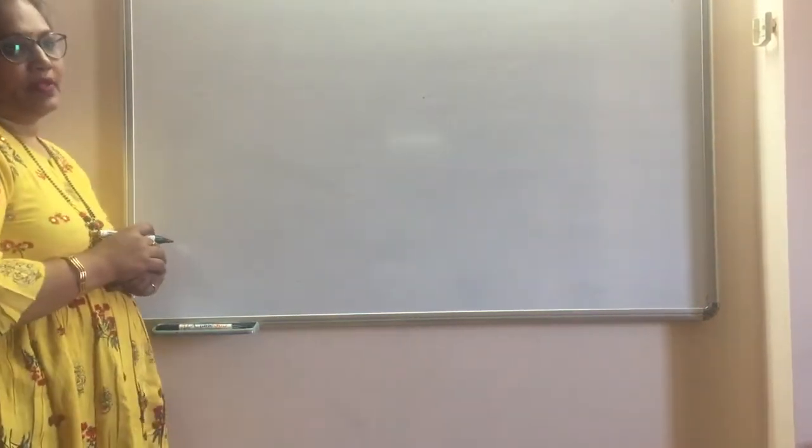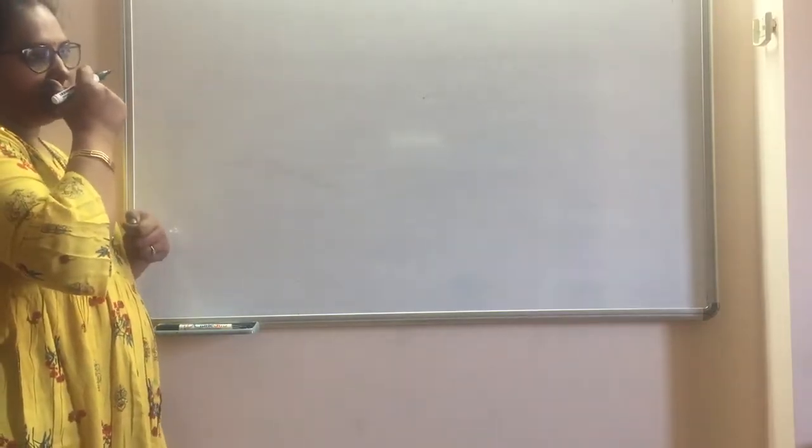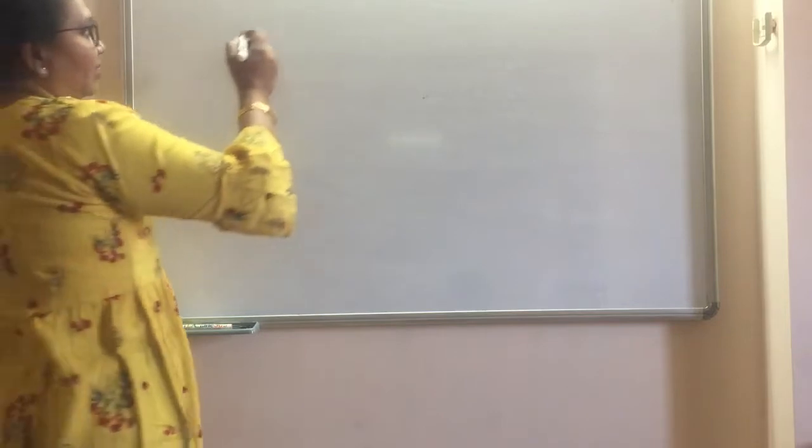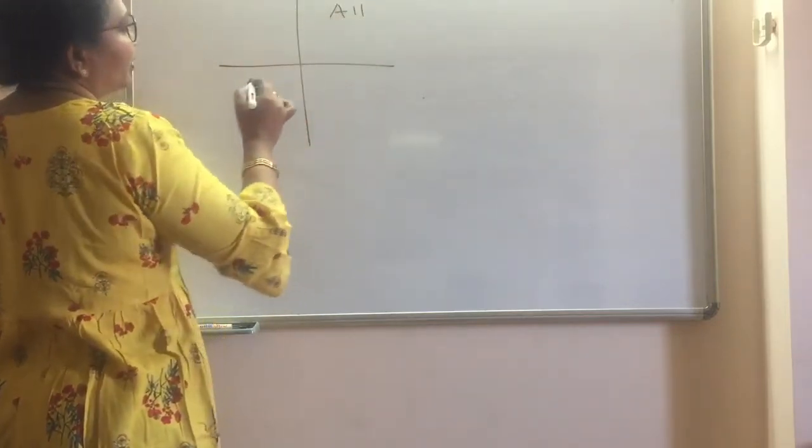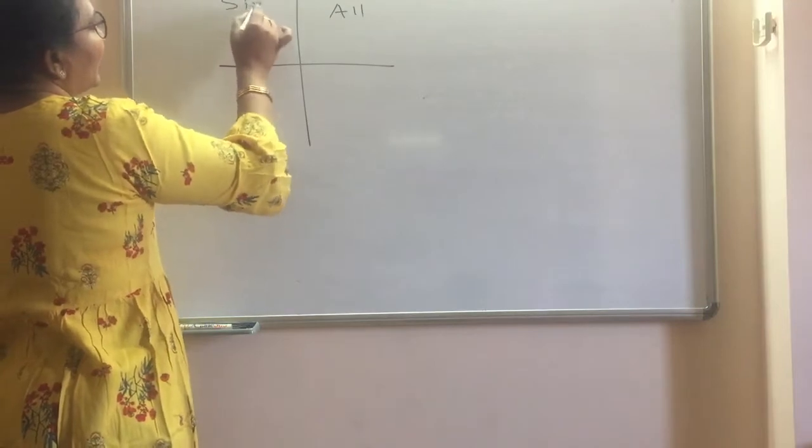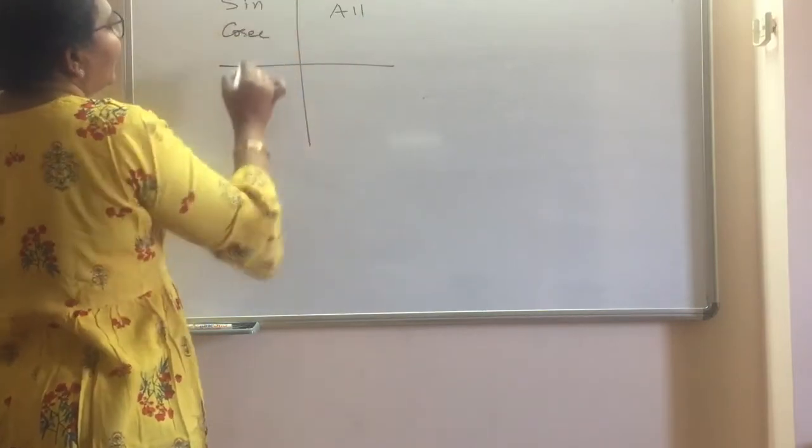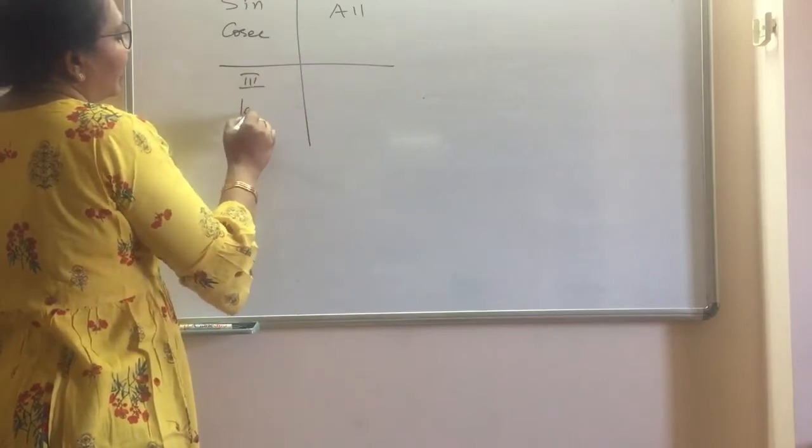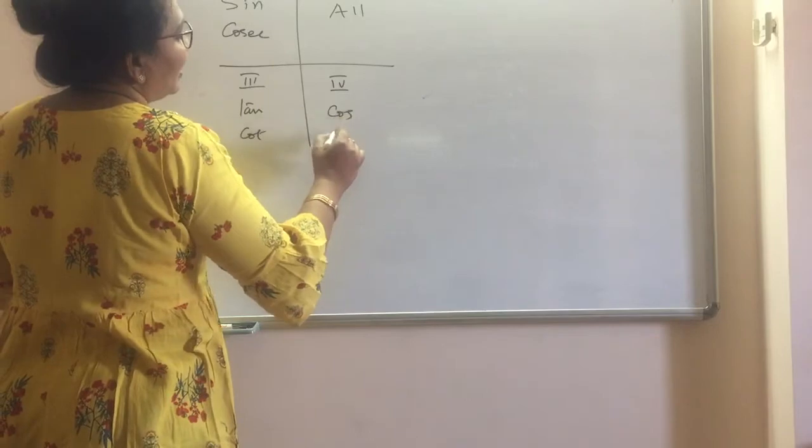Okay students, let us revise the trigonometric table. Last year we learned that in the first quadrant, all trigonometric ratios are positive. In the second quadrant, sine and cosec are positive. In the third quadrant, tan and cot are positive. In the fourth quadrant, cos and sec are positive.